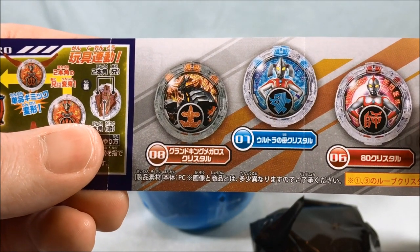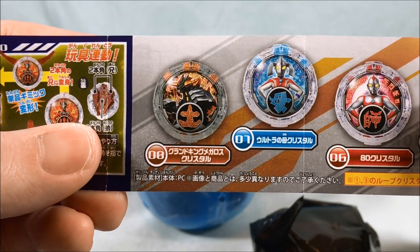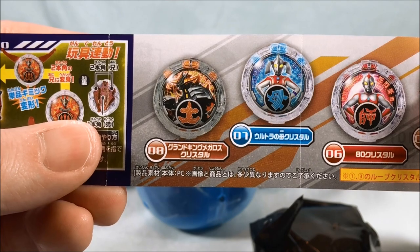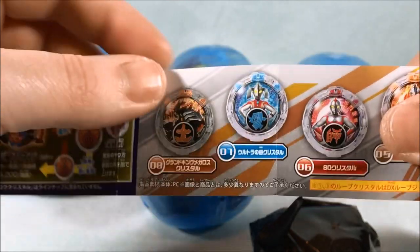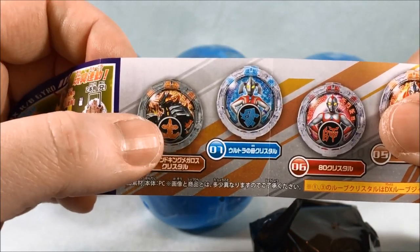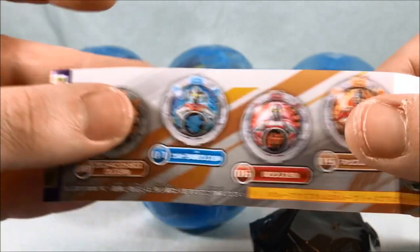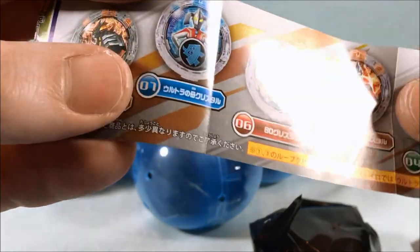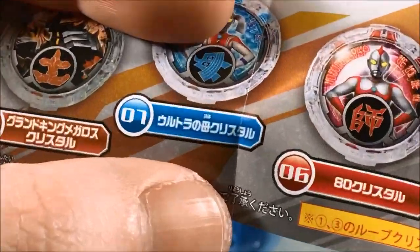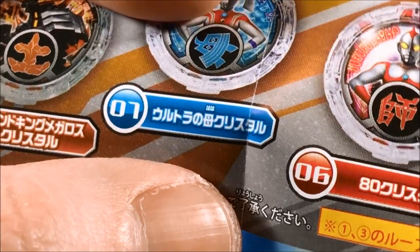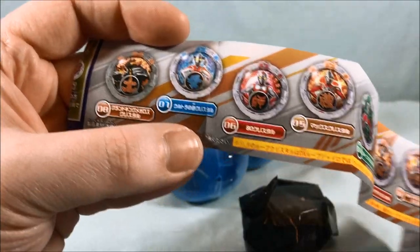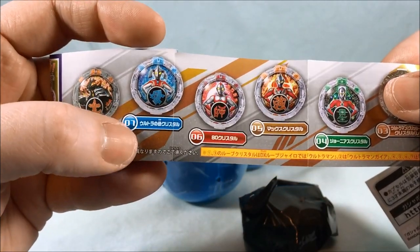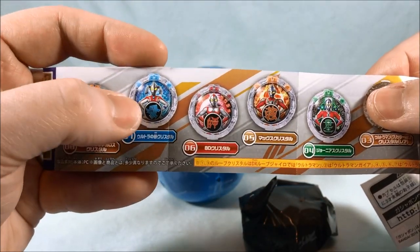Grand King Megadoss which I believe I do have already from a DX set. And then it looks like we have Ultra No, is that Chi Chi? I can't that's so small. I cannot read that. Yeah haha is father haha is mother. So yes that's Ultra No, basically mother of Ultra.